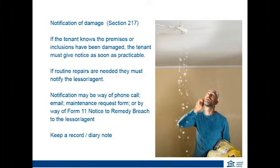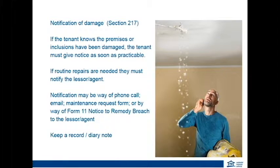Section 217 talks about the obligations of the tenant to notify the lessor agent about any damage or repairs required. Notification can be by phone call, email, fax, letter, or the tenant may issue a Notice to Remedy Breach to the lessor agent informing them of the repair. It's important to let the tenant know at the start the best way to report problems and to make sure they have contact details, particularly for after hours. Routine inspections during the tenancy are also a great opportunity to identify current repairs or future maintenance that may be required.